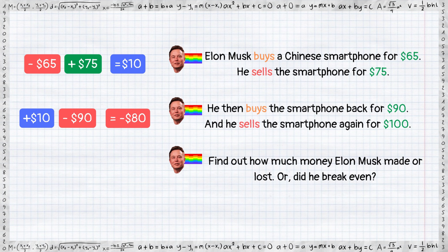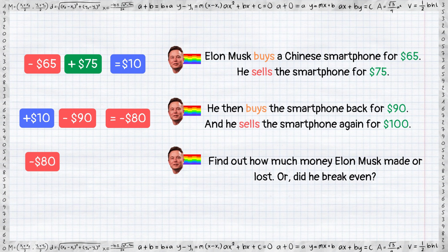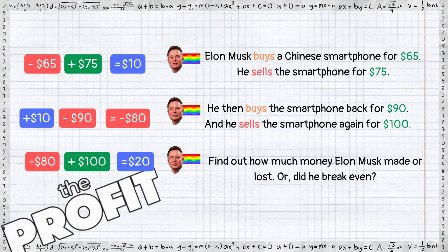Finally, he sells the smartphone for $100, which means he gets $100. The negative $80 plus $100 is equal to $20 profit.